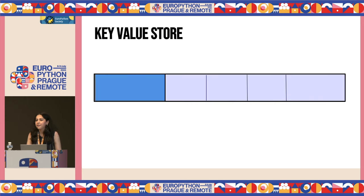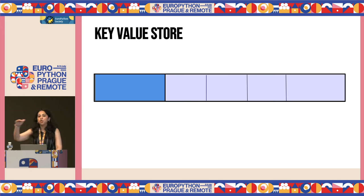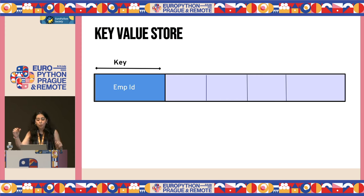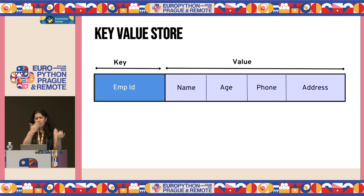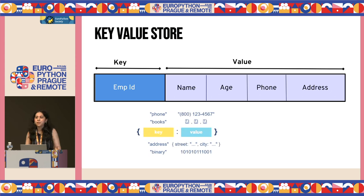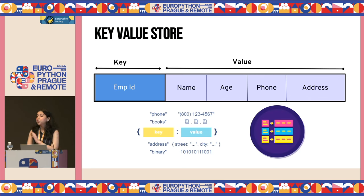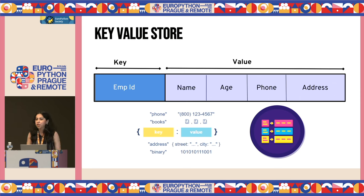RocksDB is a key-value store, which means it stores key-value pairs. This could be a traditional row in your row store, where the key could be the unique identifier of the row and the value could be the values associated with the columns. Or it could be a more flexible data storage format like a JSON document, where the key is the row ID and the value is whatever is next to it. Or it could just be a blob of bytes that the application sitting on top understands how to decode.